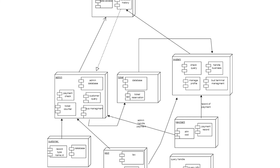In the system there is a main server which contains all the data and information about the whole blocks. The first block is the Admin block, which contains all the information like payment check, admin database, ticket counter, account, customer query, and bus management.